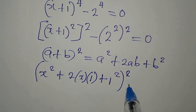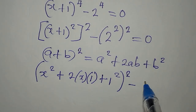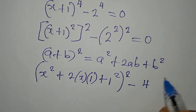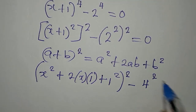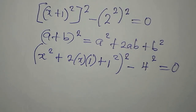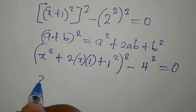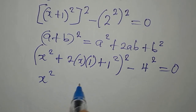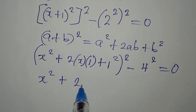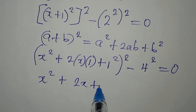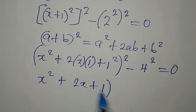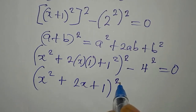Then minus 2 times 2, which is 4, squared on it — and we equate to 0. So we have x squared plus 2x plus 1, squared, minus 4 squared equals 0.